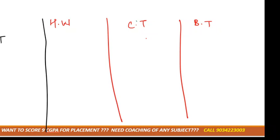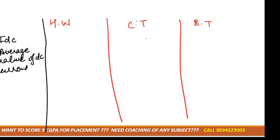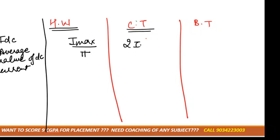First is IDC, which is the average value of DC current. The formula for IDC in case of half wave rectifier is Imax divided by pi. In case of center tapped rectifier, this formula is 2 Imax divided by pi. In case of bridge type rectifier also it is the same, that is 2 Imax divided by pi.